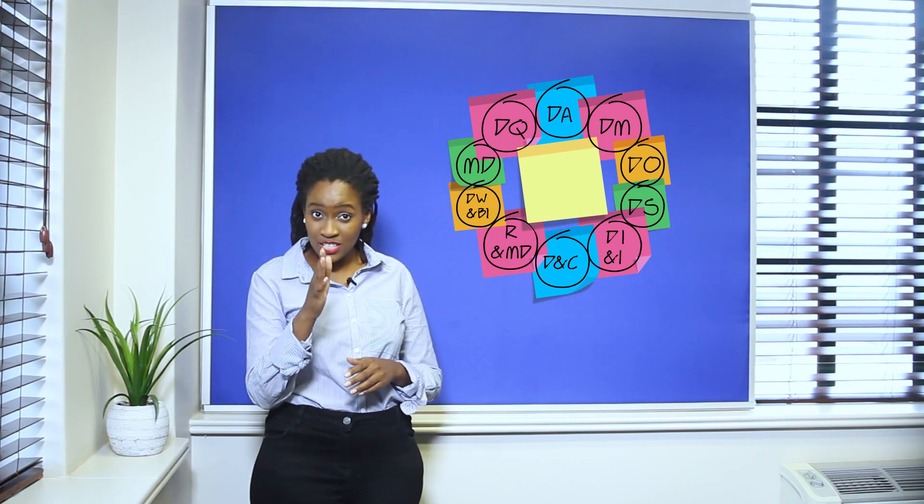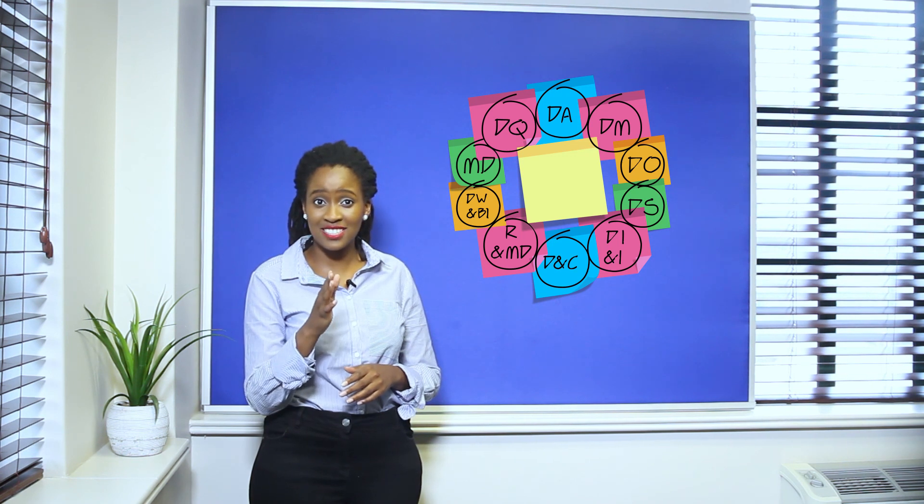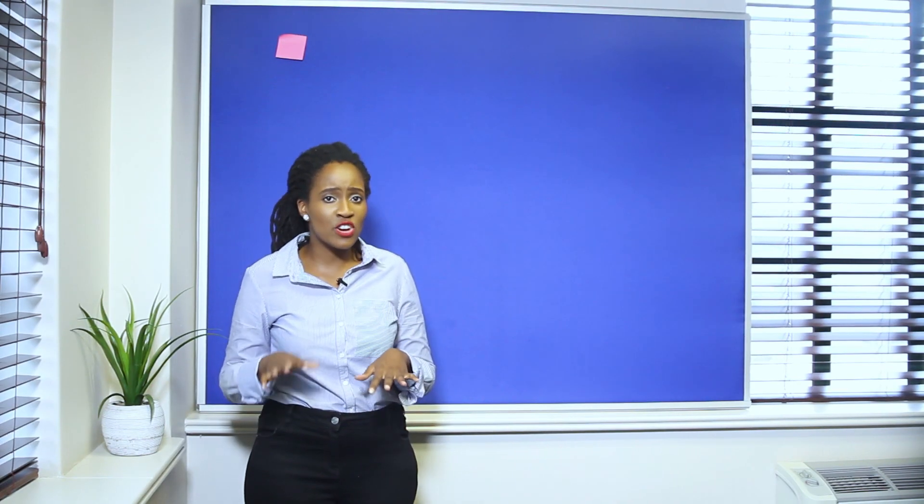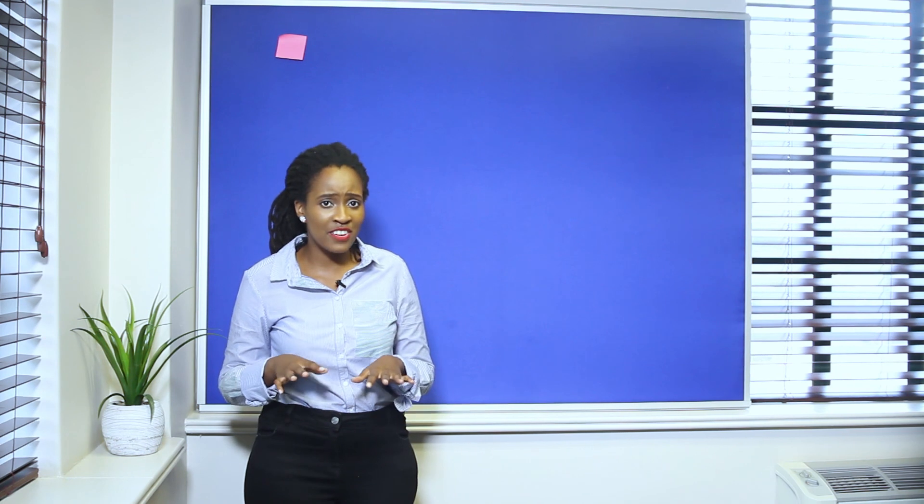At the center of these knowledge areas is data governance. Data governance enables each knowledge area — it is a collection of practices and processes which help to ensure the formal management of data assets within an organization, kind of similar to a traffic officer directing traffic.